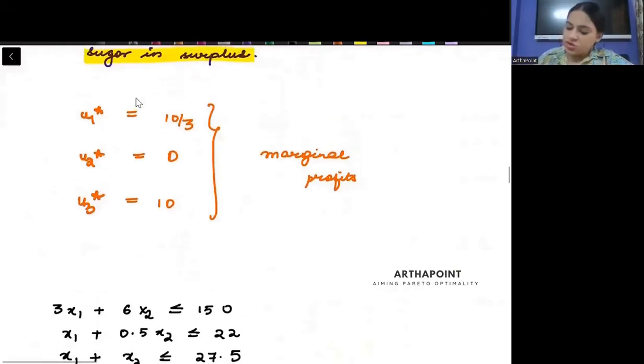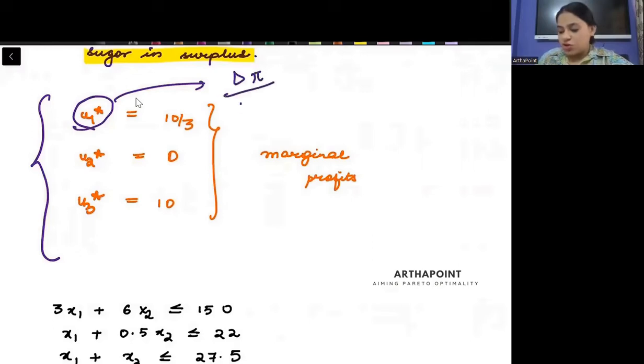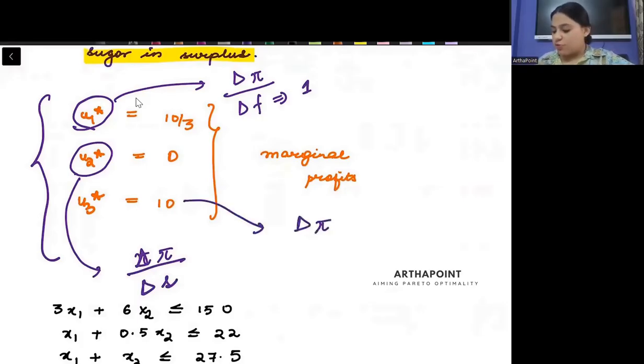Now, try to combine the things together and see these things together. This is U1 star. U1 star is representing how my profits change when my flour changes by one unit. This is U2 star. This represents how my profits change when there is change in sugar by one unit. They will not change. Then, this is U3 star. How my profits change when my butter changes by one unit. These values that we have found out, U1 star, U2 star, U3 star, these values are called as marginal profits.